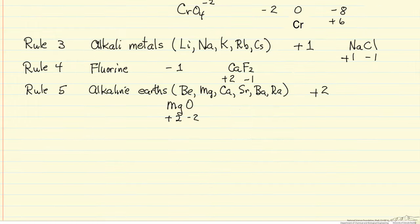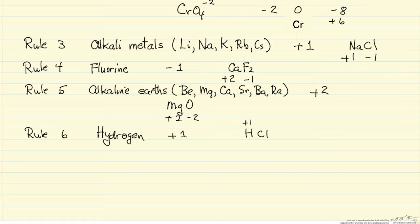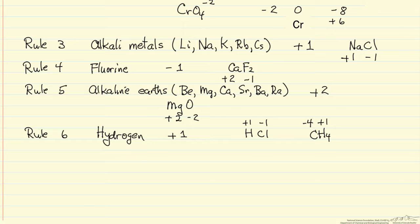The next rule is for hydrogen. It says the oxidation state of hydrogen in a compound is plus 1. For example, in hydrogen chloride, the oxidation state of hydrogen is plus 1 and chlorine is minus 1. In methane, hydrogen is plus 1 — and with 4 hydrogens, carbon must be minus 4 so that the total charge, which is 0, equals the sum of the oxidation states.